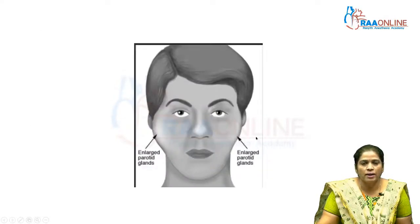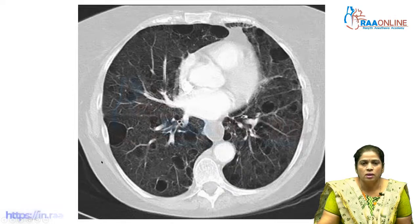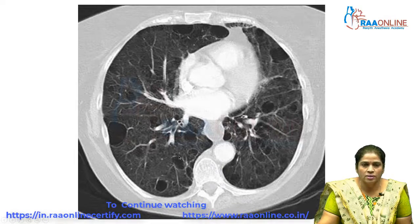This shows parotid gland enlargement that can happen. This is the LIP — lymphocytic interstitial pneumonia — with characteristic cystic lesions on the CT scan of the lung.